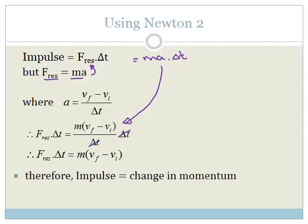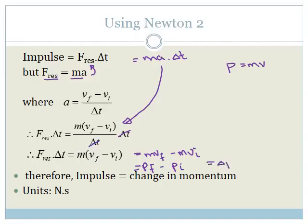And we get that F_res times delta T equals M v_f minus v_i. But that there is just the change in momentum because that can be rewritten as M v_f minus M v_i. And you guys know that momentum is equal to mass times velocity. So that is just P_final minus P_initial, which is basically delta P. Therefore, we can say that F_res delta T is equal to delta P.